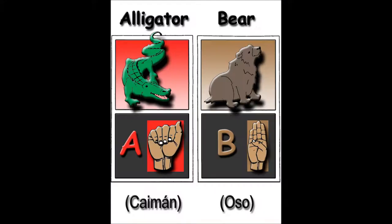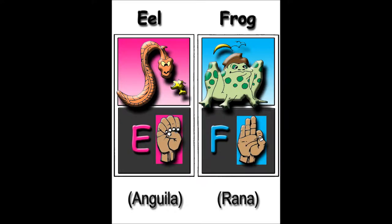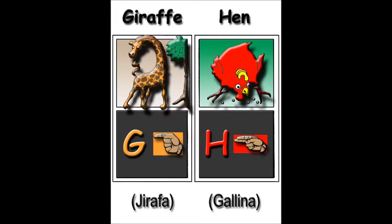A is for the alligator. B is for the bear. C is for the caterpillar creeping everywhere. D is for the dog and E is for the eel. F is for the frog that leaps for his meal.